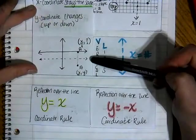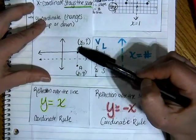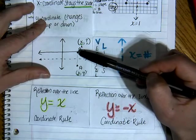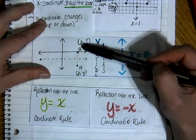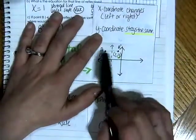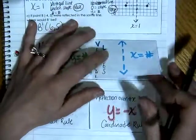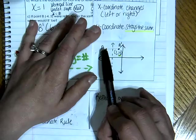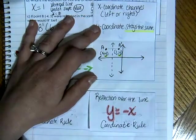Remember that horizontal lines are always going to be y equals a number. We count our point up to the reflection line and reflect, counting that same exact number of units on the other side to find our image. The same thing goes with vertical lines — vertical lines are x equals a number equations, and we count across the reflection line to identify our reflection point.